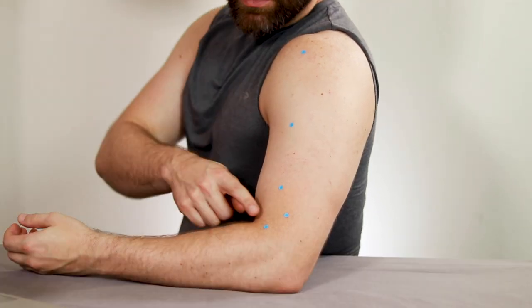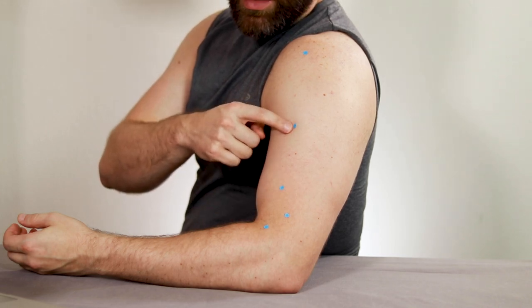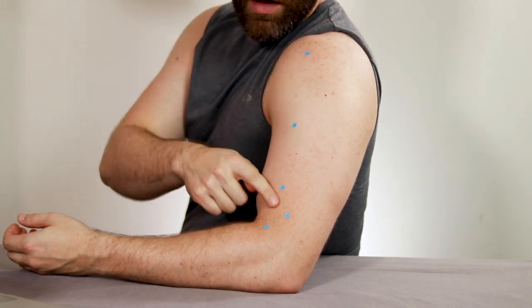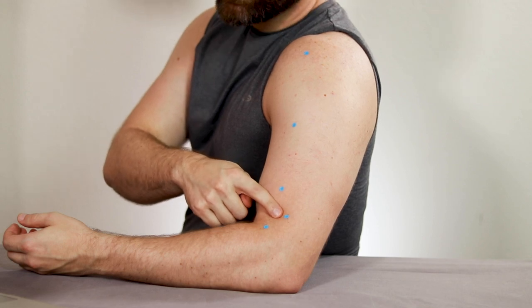Now we can see that LI11, LI13, LI14, and LI15 are all in the line. LI12 is off the line, 1 cun posterior.